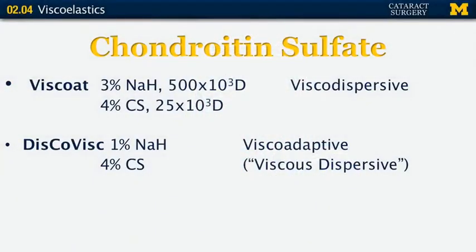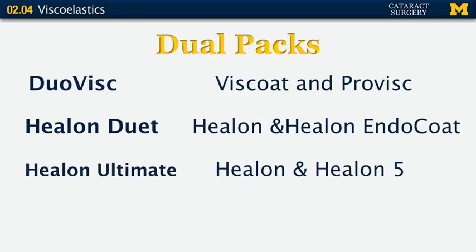Let's move on to chondroitin sulfate viscoelastics. Viscoat is a very common viscodispersive agent — notice its low molecular weight and combination of sodium hyaluronate and chondroitin sulfate, making it an excellent coater. DiscoVisc was Alcon's answer to Healon 5, with both cohesive and dispersive properties, making it viscoadaptive. Several companies use dual packs: DuoVisc combines Viscoat and ProVisc so you don't have to open two separate packages. Healon made Healon Duet — Healon and Healon Indicote — and Healon Ultimate, which is Healon and their viscoadaptive agent, Healon 5.